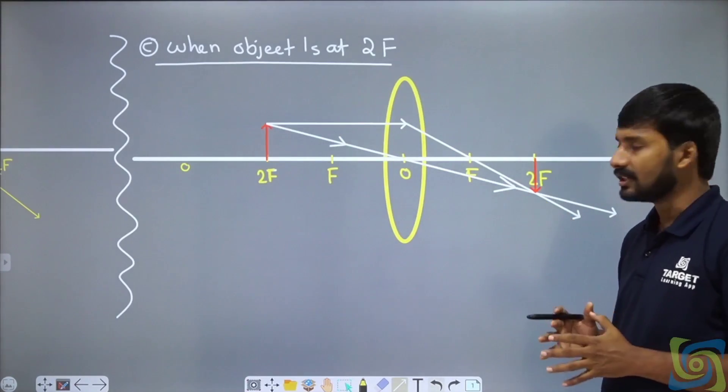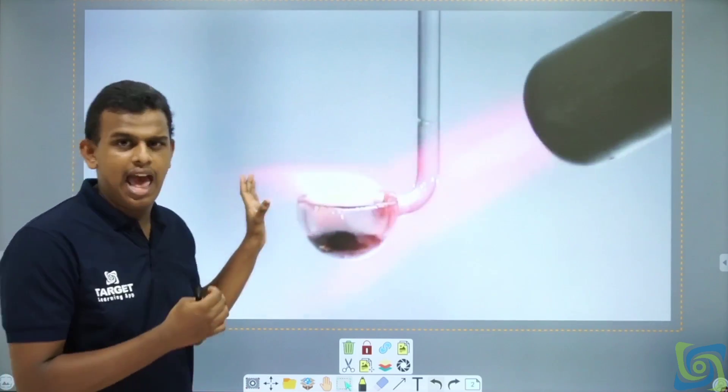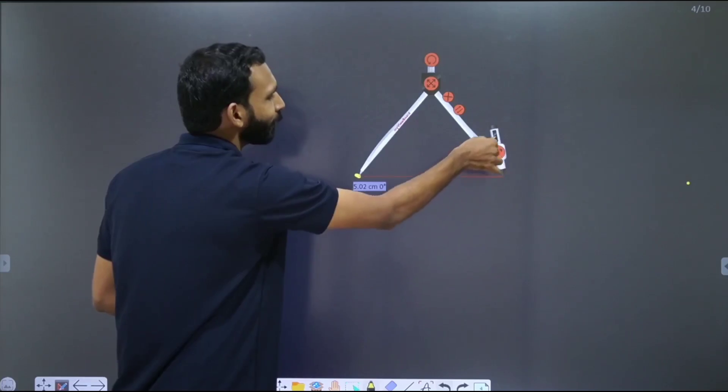When you look at the 2F object, you will have a developed image of the 2F position. You will have an experiment in the lab. So you will be able to do that.